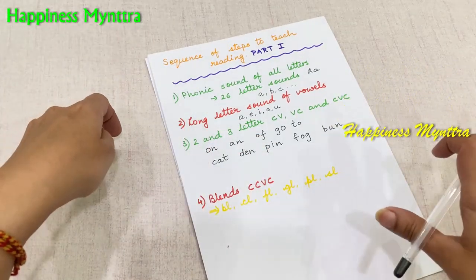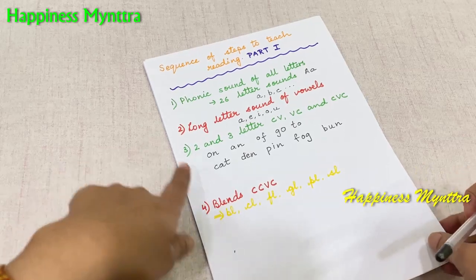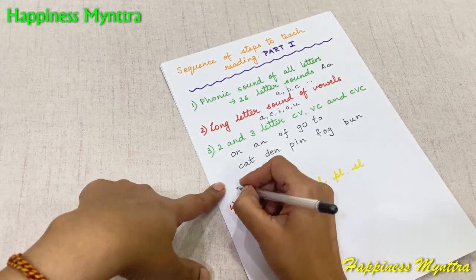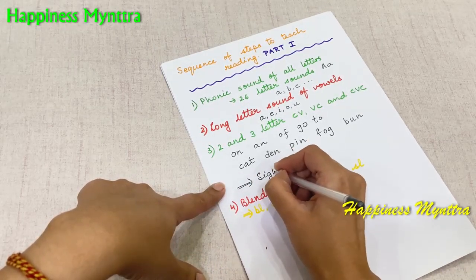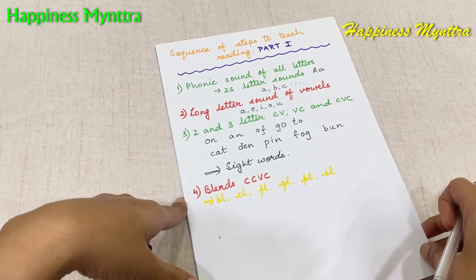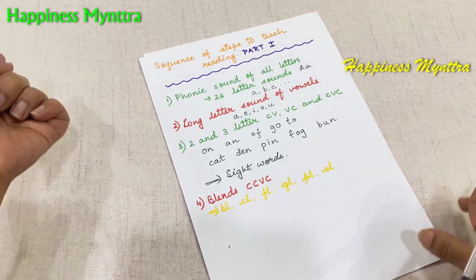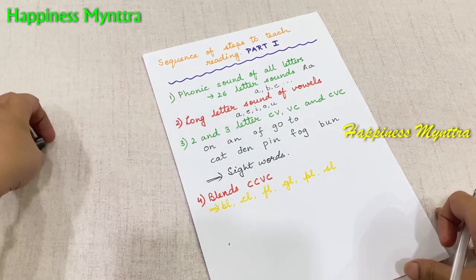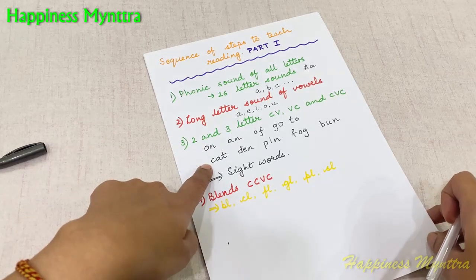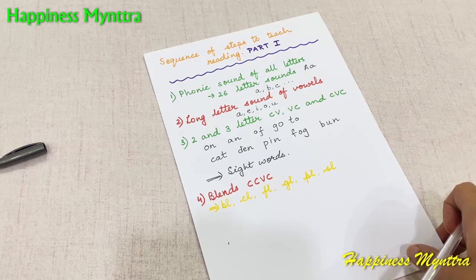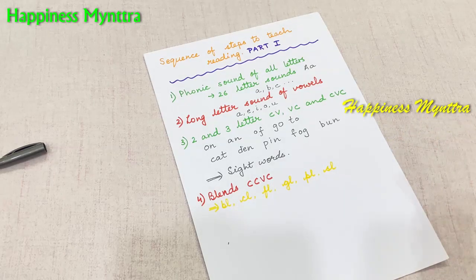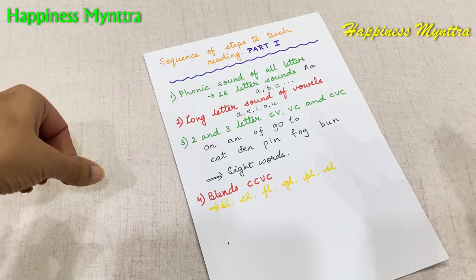Once they are very comfortable with three-letter words, then we move on to the blends. Here I often suggest that sight words should be introduced — maybe start with five sight words. The goal is to start reading short sentences, for example, 'The cat is fat,' because ultimately our goal is to make them read sentences, paragraphs, and comprehension. From words, the faster we switch to sentences, the easier it is for them to become fluent.